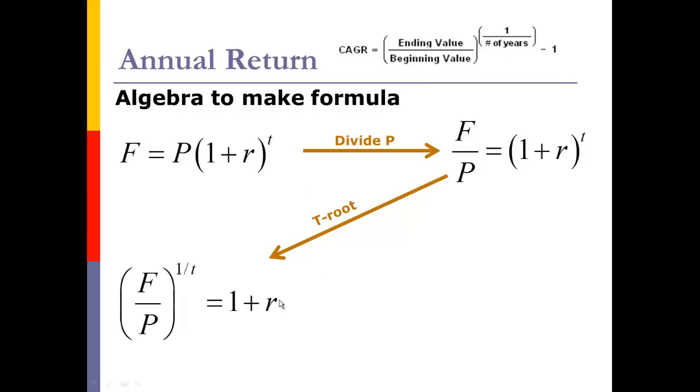Our last step to get r by itself is to get rid of this 1, so we're going to subtract the 1, and that's why you're seeing that 1 there. That's the algebra to make the formula for our compounding annual growth rate. This is a way that we can use to calculate how our investments have turned out.